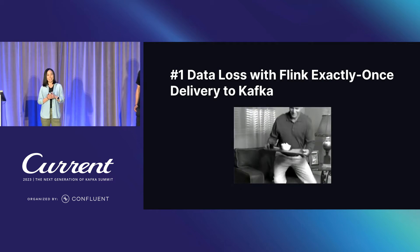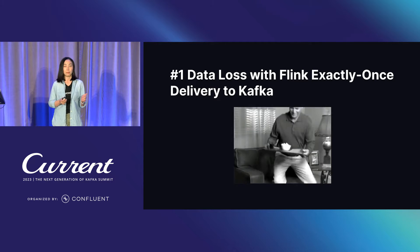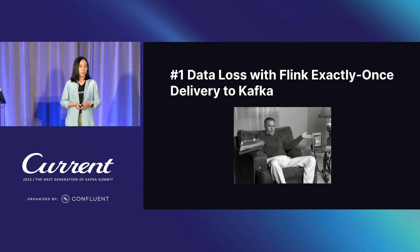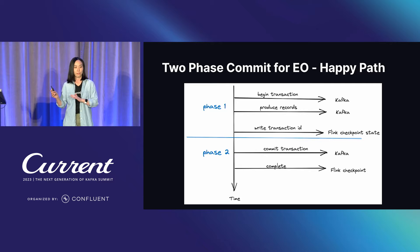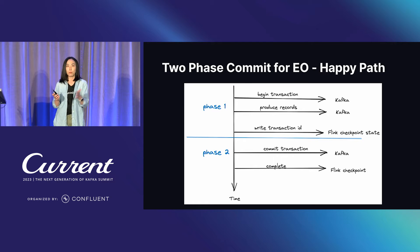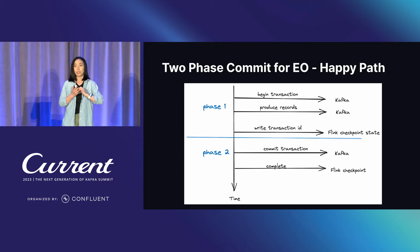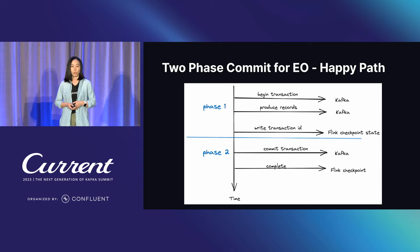Starting with the data loss situation, which is definitely not fun. Flink exactly-once delivery is implemented using a two-phase commit protocol and utilizing Kafka transactions. In phase one, Flink has a Kafka producer client. It initiates a transaction, begins writing records to Kafka. When the checkpoint barrier comes to the sink operator, it writes the transaction ID into the Flink checkpoint state, and phase one is done. For phase two, the Flink Kafka producer client commits the transaction to Kafka, marking the end of phase two. This is the happy path — data is delivered exactly once.